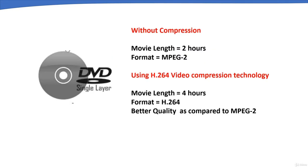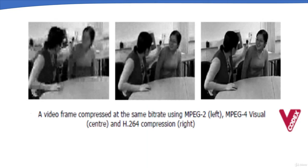As an example, a single layer DVD can store a movie of around 2 hours in MPEG-2 format. Using H.264, it is possible to store 4 hours or more of video at the same quality on the same media. H.264 compression format delivers better quality at the same bit rate compared to MPEG-2 and MPEG-4, as shown in the comparison images.